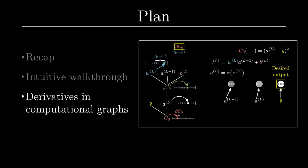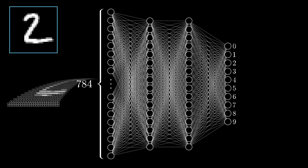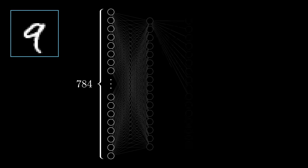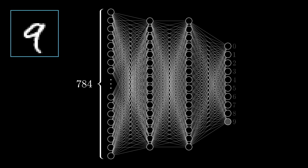If you watched the last two videos, or if you're just jumping in with the appropriate background, you know what a neural network is and how it feeds forward information. Here we're doing the classic example of recognizing handwritten digits, whose pixel values get fed into the first layer of the network with 784 neurons, and I've been showing a network with two hidden layers having just 16 neurons each, and an output layer of 10 neurons, indicating which digit the network is choosing as its answer.